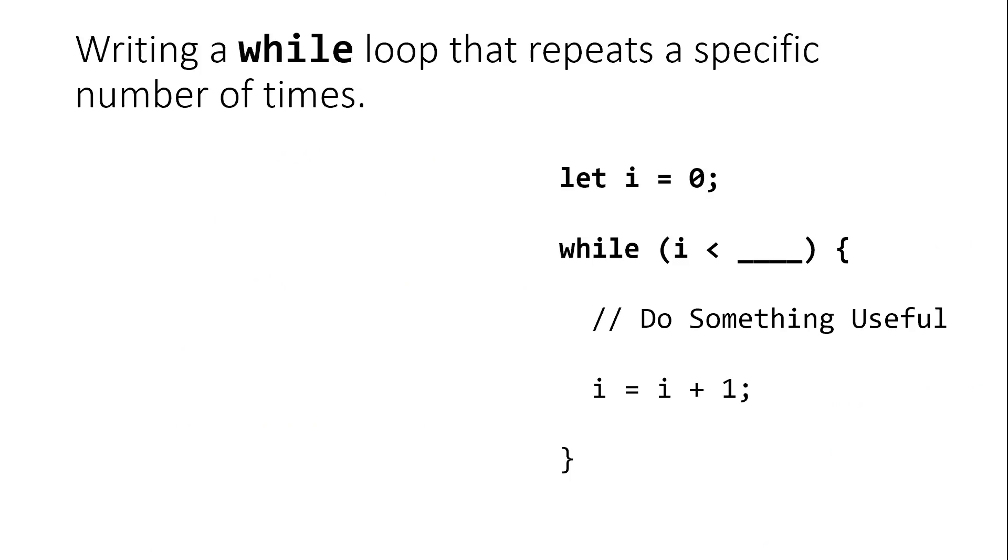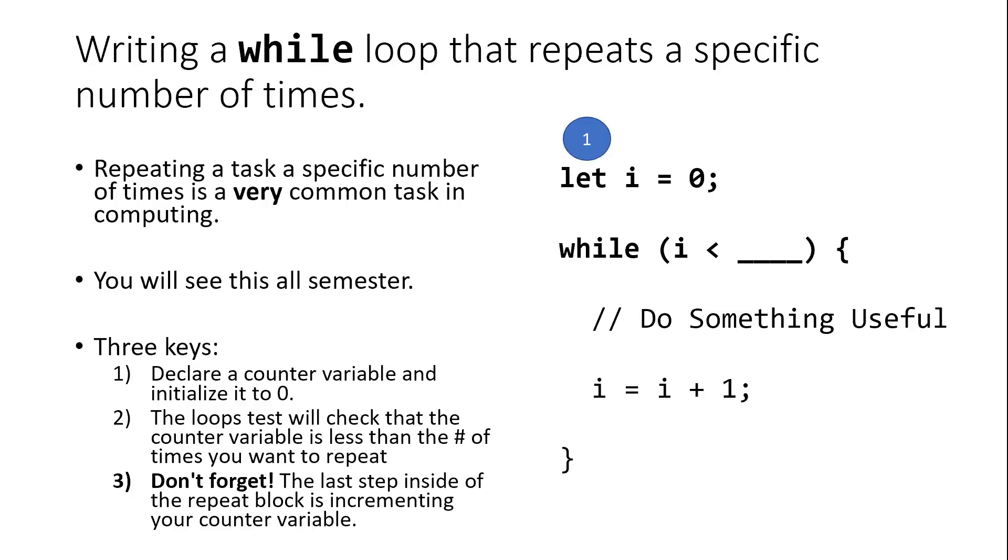How do we write a loop that runs a specific number of times? Well, we've got a few key ingredients here. First, you declare a counter variable. In this case, we're naming the variable i. This is a convention that's often used in programming. i is an incrementing variable. It's initialized to zero. Then we're going to say the number of times we want to loop. We will loop while i is less than that, because we're starting from zero. Then we're going to do something useful inside of the repeat block, and the last step of our repeat block is to increment our i variable by one. Using this pattern, we can write code that will repeat n number of times, where n is what we write inside of this step here. So if we wanted this code to run 10 times, we would put i is less than 10 here.